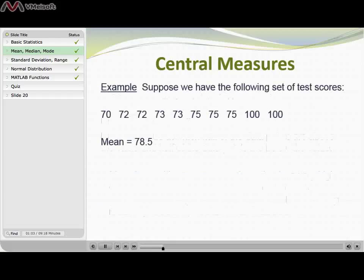Quick and easy example here. Suppose I have a set of 10 test scores and I've listed the test scores here. If I want to calculate the mean or the average, I just have to add the 10 test scores up and divide by 10, and in this case I will get an average of 78.5.